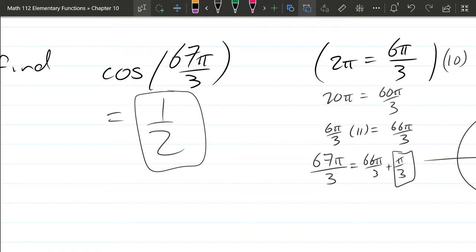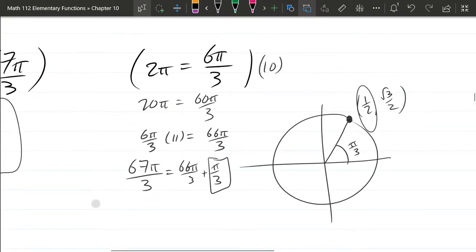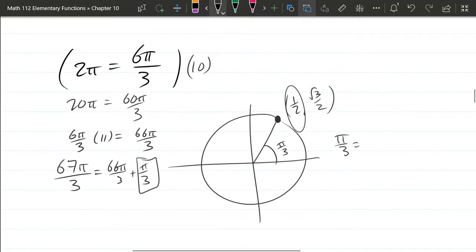So all we did was pull the whole lot of rotations out of that angle. And what I grabbed was actually the reference angle. So you could write π over 3 is the reference angle for 67π over 3.